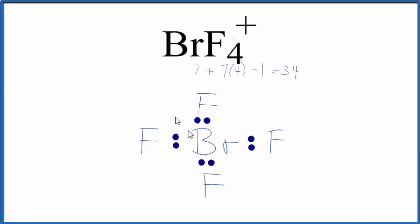Then we'll go around the outside and complete the octet on the fluorine atoms. So at this point, we've used 32 total valence electrons. And the fluorines, each one of those, has an octet.